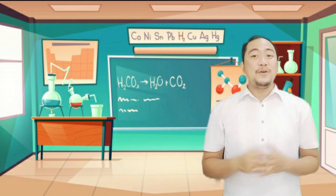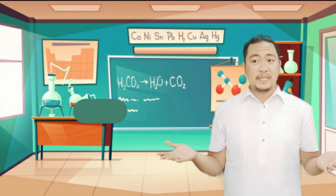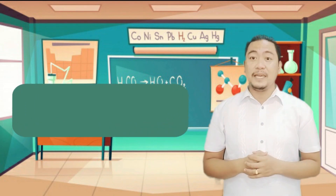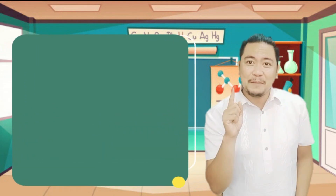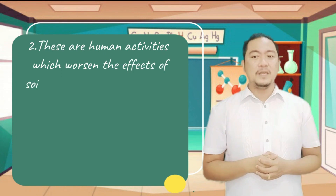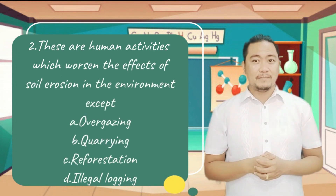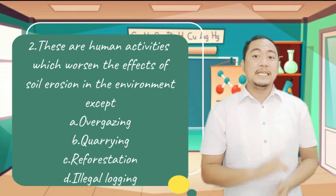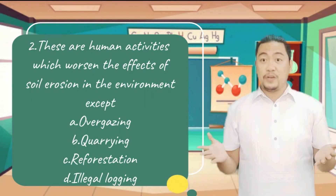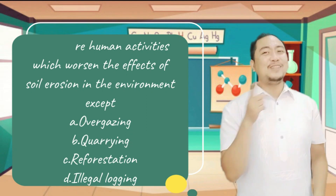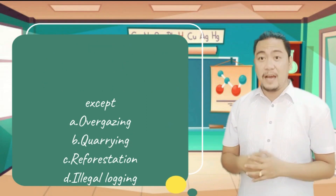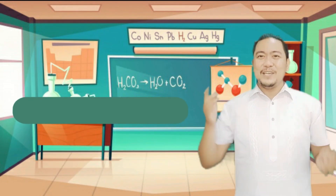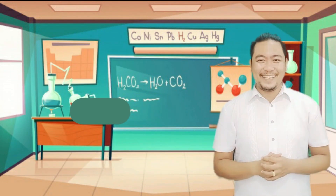Number 2. These are human activities which worsen the effects of soil erosion in the environment, except... A. Overgrazing. B. Quarrying. C. Reforestation. D. Illegal logging. And the answer is letter C. Great job learners!